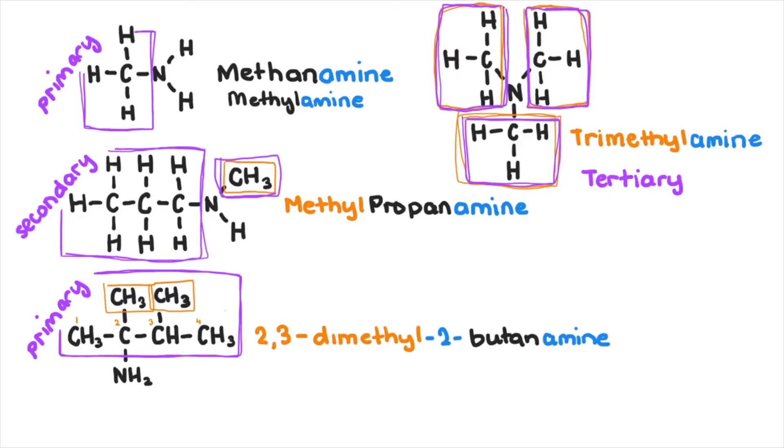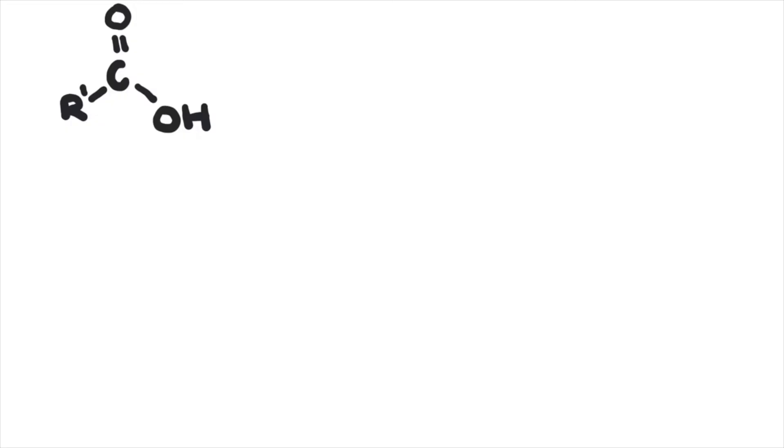So what about the amides? If you take a carboxylic acid and replace the hydroxyl part with an amine, you get an amide. These have these general structural formulas where each R can either be an alkyl group or a hydrogen atom.